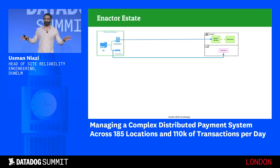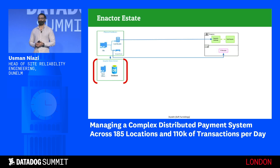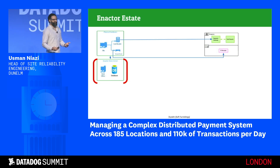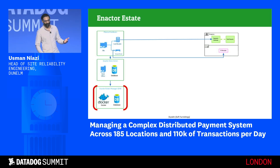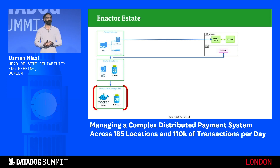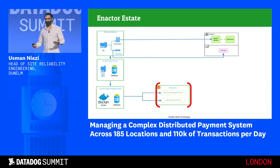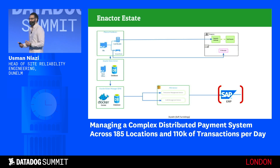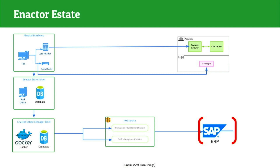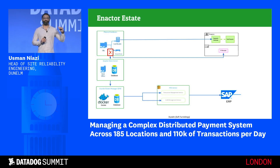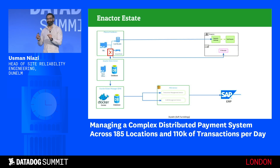Once the transaction is complete, it is sent to the store server, which receives transactions from all tills in that store. It processes the transaction and sends it over to the state manager, which receives transactions from all stores. The state manager in turn sends that over to an integration layer developed in-house on a serverless stack, which maps it and sends it to SAP, our ERP system. One thing to note: when a till sends a transaction to the store server, it's a send-and-forget mechanism, so there's no easy way of knowing if a transaction has actually been sent successfully.